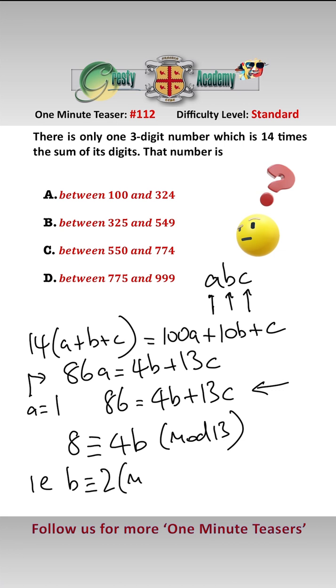That is, B is 2 mod 13, which also means it's 2 mod 10. So B must equal 2, and therefore sticking A and B into there, we get that C is 6.